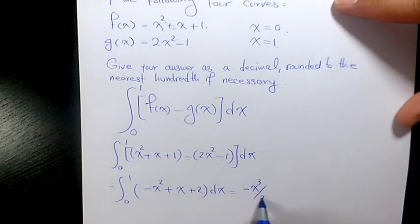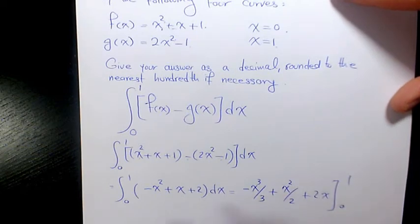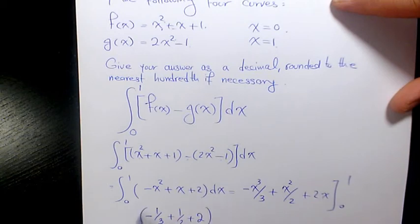The integral is going to be negative x cubed over 3 plus x squared over 2 plus 2x, changing from 0 to 1. When you substitute, there is going to be negative 1 over 3 plus 1 over 2 plus 2 times 1 minus 0, because if you sub 0 in here it's going to be 0.